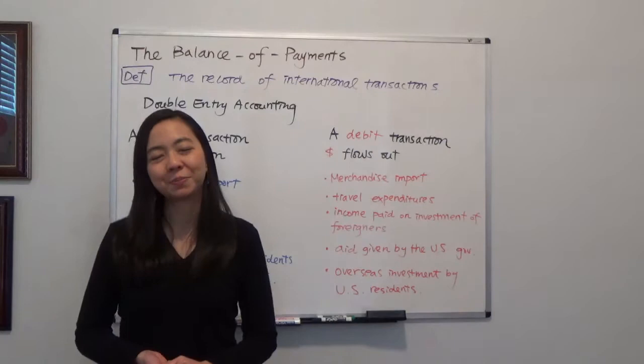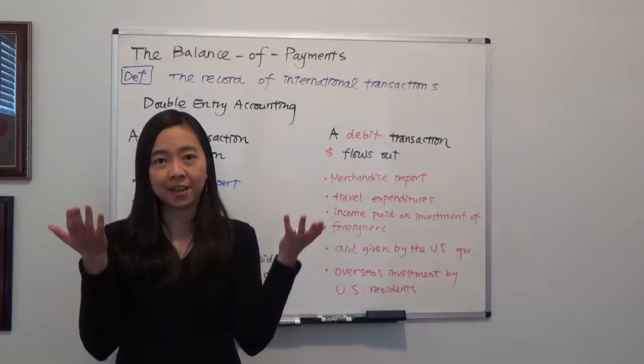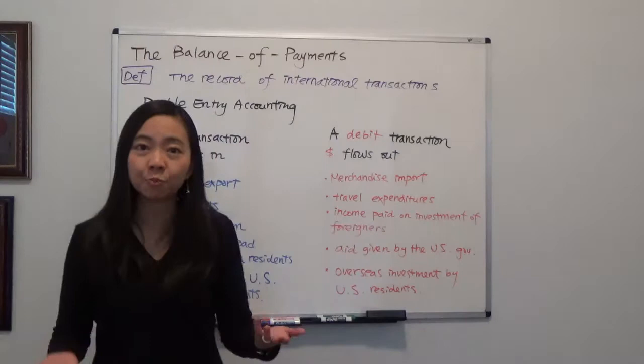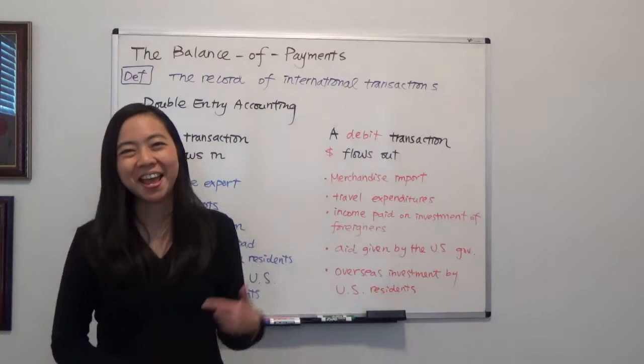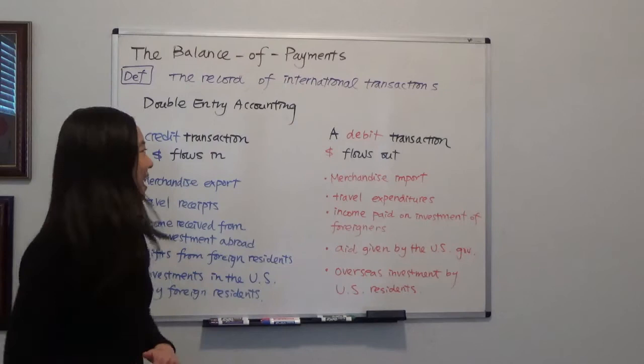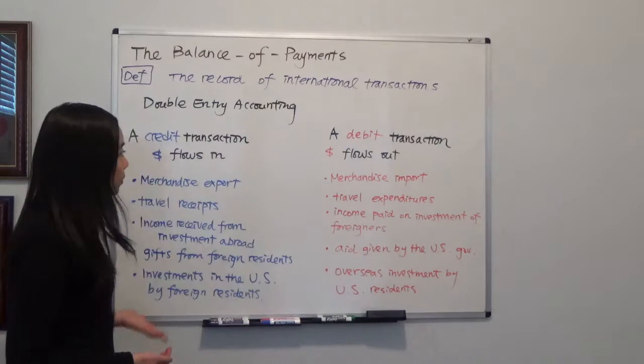If you remember from your Accounting 101, when you record a transaction, there's a debit side and a credit side, and eventually you need to balance the balance sheet. For the balance of payments, it's the same — we use a double-entry accounting system. When we have a transaction, either money flows out or money flows in. When there is a credit transaction, that means money flows in. When there's a debit transaction, that means money flows out.